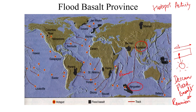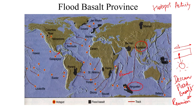The Paraná flood basalts are due to the Tristan da Cunha hotspot. The Isthmus of Panama and adjoining regions are because of the Galápagos hotspot, and the Caribbean is linked to another hotspot. Several of these hotspot activities have led to the formation of important flood basalt provinces, all genetically linked to their respective hotspots.